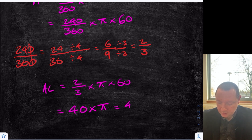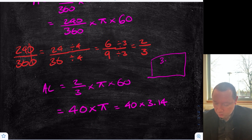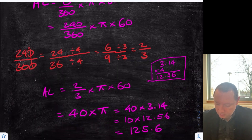So that's 40 times 3.14. Times by 40 is the same as times by 10 and times by 4. So at the side, do 3.14 times 4: 4 fours is 16 carry 1, 4 ones is 4 plus 1 is 5, 4 threes is 12 — so you get 12.56. Then 10 times 12.56 is 125.6, and our units were centimetres.